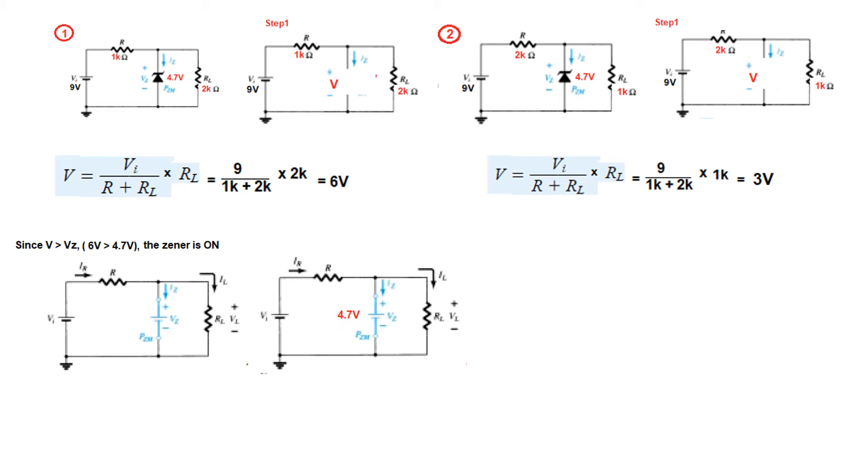But when it is off because V is less than VZ, the Zener is off so we keep it open and whatever is the calculated voltage that will be the voltage V, so it will be 3 volt here. So I hope this concept is clear. Only if you have got this concept you will be able to solve the problems without any error.